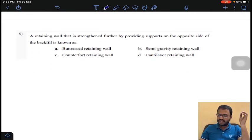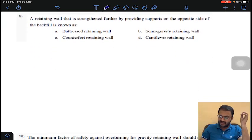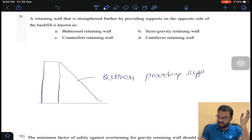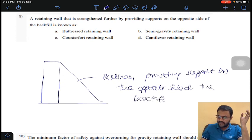Coming to question number 9 of the assignment. A retaining wall, for example, this retaining wall has been provided like this with buttresses. This buttress is provided supports on the opposite side of the backfill. Option A for question number 9.